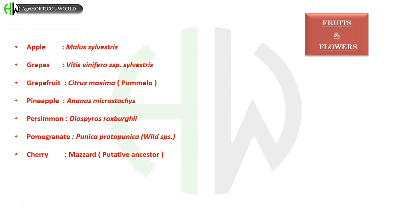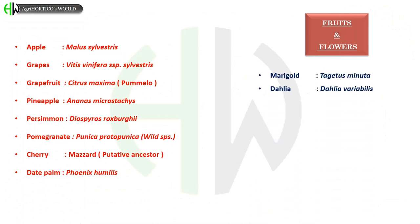Cherry – Mazard, which is the putative ancestor, meaning generally considered as ancestor. Date palm – Phoenix humilis. In flower crops: Marigold – Tagetes minuta. Dahlia – Dahlia variabilis.